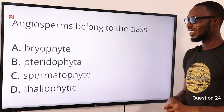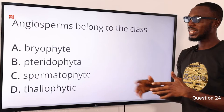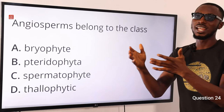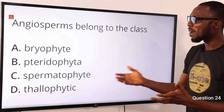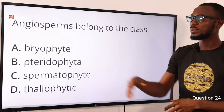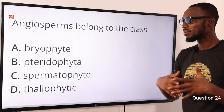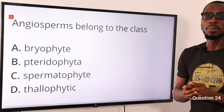Question 24: Angiosperms belong to the class of what? They belong to the Spermatophytes — the flowering plants, which can be gymnosperms or angiosperms. Gymnosperms have naked seeds while angiosperms have seeds enclosed within the fruit. Angiosperms can either be monocotyledon or dicotyledon. Bryophytes cover liverworts and mosses; Pteridophytes cover ferns; Thallophytes cover simple green aquatic plants. So the correct option is option C for Spermatophytes.